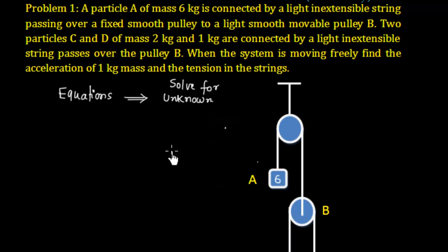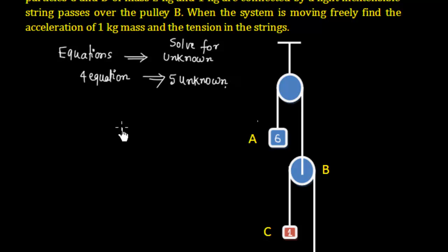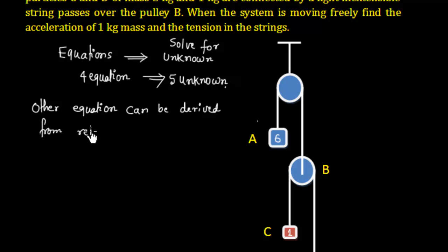But sometimes, let us say I have a Newton's law situation that gives me only 4 equations and we have 5 unknowns. In these cases, how do we solve these equations? We look for another equation, and that relation basically comes from the relation between accelerations. So another equation can be derived from the relation between accelerations.